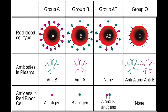What does it mean if you are of blood group B? If you are of blood group B, that means you have B antigen on your red blood cell surface and anti-A antibody in the plasma.